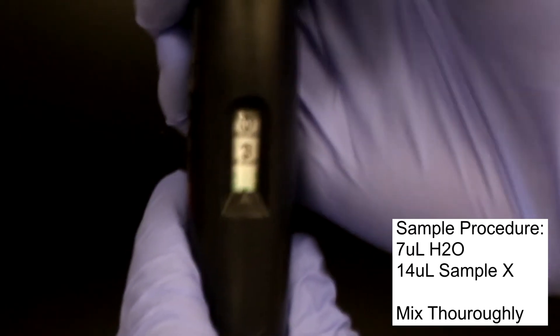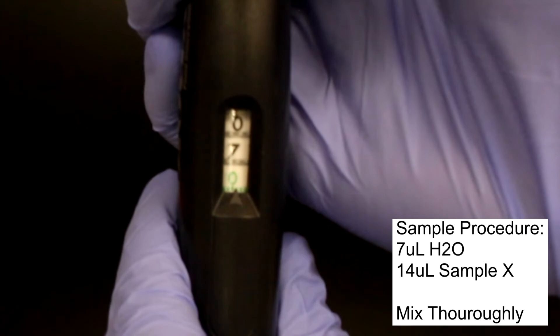This example procedure requires 7 microliters of water, to which the pipetter's volume is set.